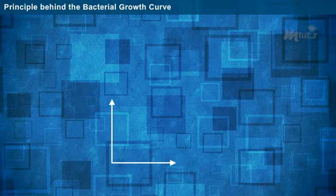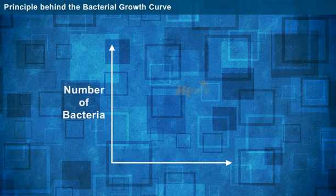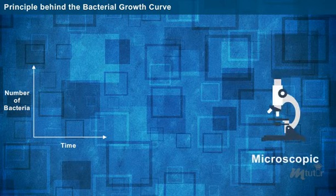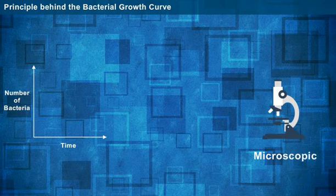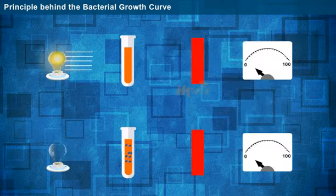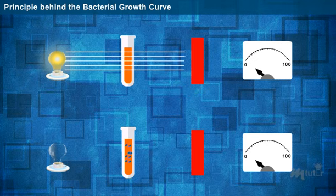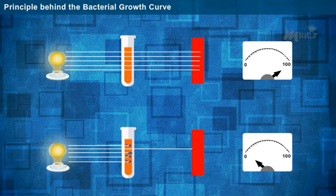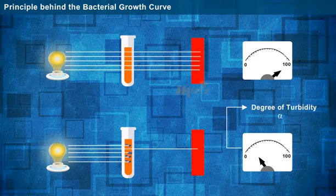The bacterial growth is studied by plotting the details in a graph, that is, the number of bacteria versus time. The number of bacteria present in broth is calculated by direct microscopic count or by indirect method using a spectrophotometer. The spectrophotometer is an instrument used to measure the turbidity, that is, the measure of the amount of light absorbed by the bacterial suspension. The degree of turbidity is directly proportional to the number of microorganisms.